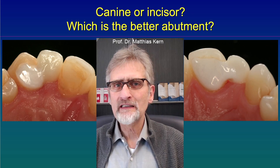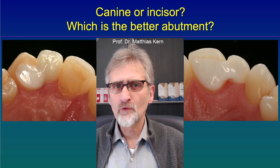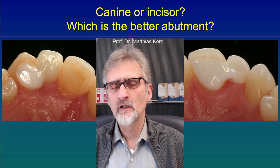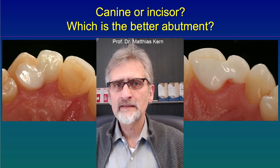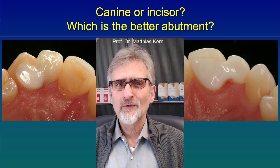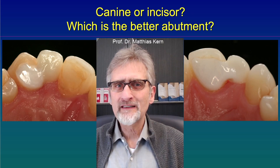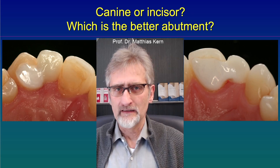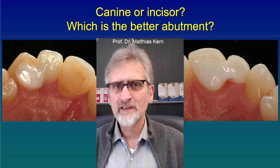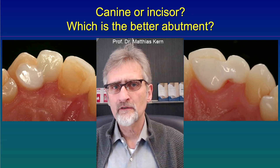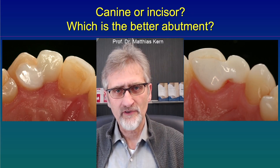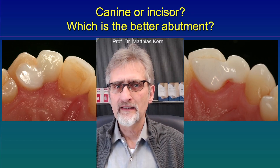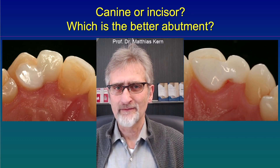On the two images you see two single-retainer resin bonded bridges, which were used to replace two resin bonded bridges with two retainers, which failed. We know that two-retainer resin bonded fixed dental prostheses or bridges are failing much more often than single-retainer resin bonded bridges.